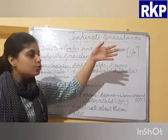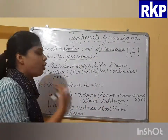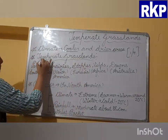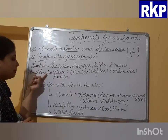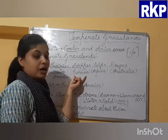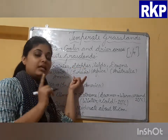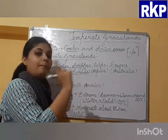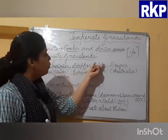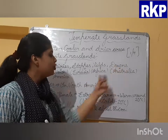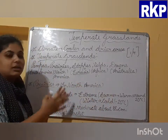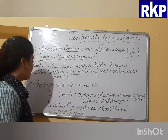Temperate grasslands are known by different names in different continents: Pampas in South America, Prairies in North America, Steppes in Eurasia — which means Europe plus Asia together — Velds in Africa, and Downs in Australia. We will now discuss each of these names one by one.